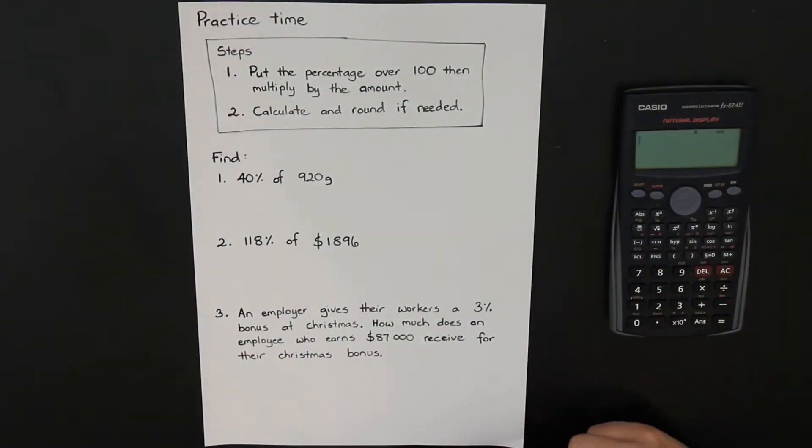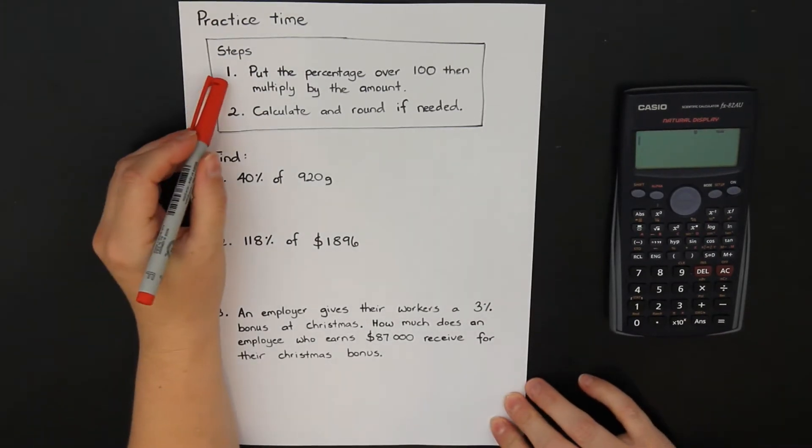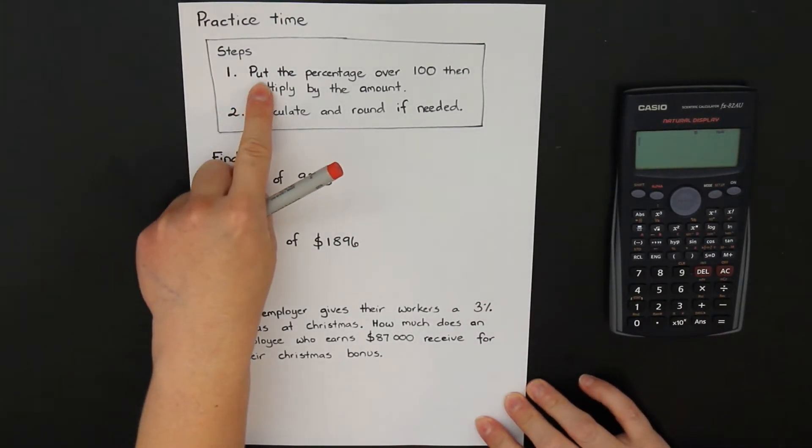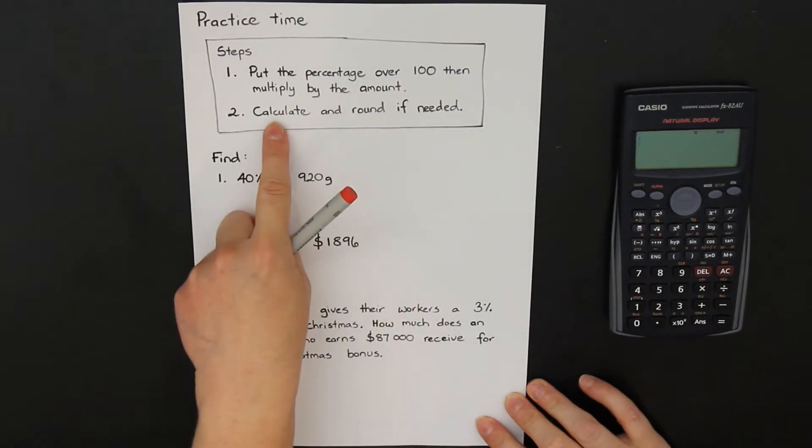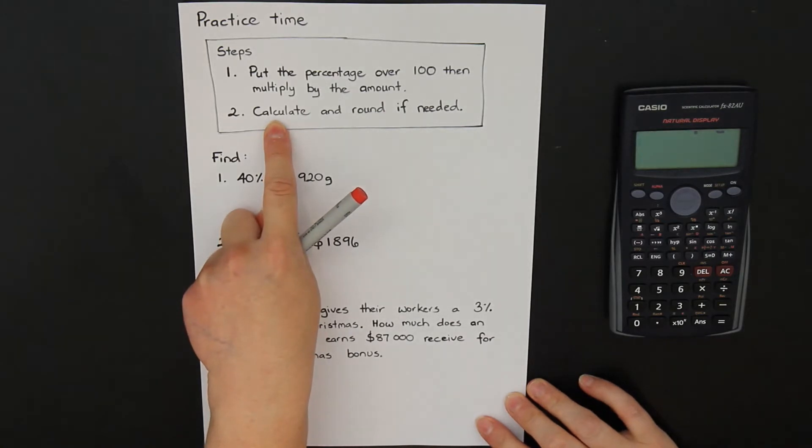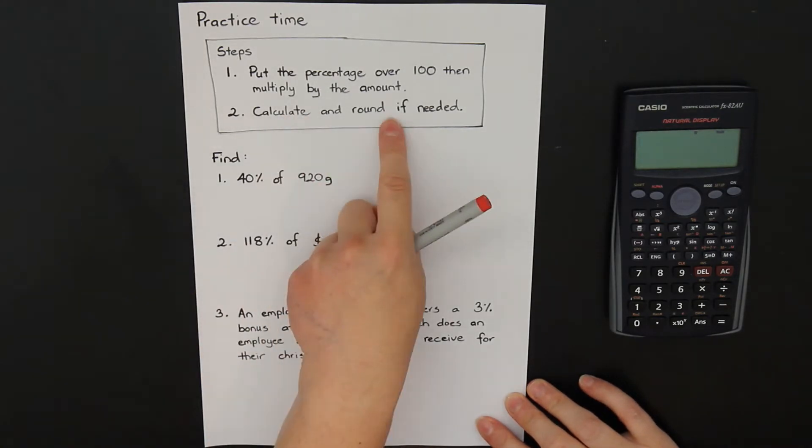It's time for you to have a practice. So here are the steps for you. First of all, we put the percentage over 100 and then multiply by the amount. And then all you need to do is get your calculator to calculate your answer. And sometimes you may need to round your answer.